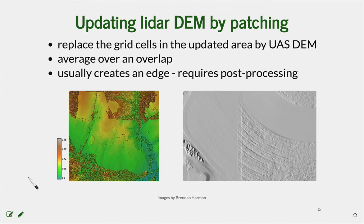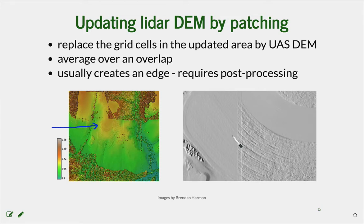The first and simplest approach is just patching the larger LiDAR-DEM with the UAS-DEM, either using a specific patching tool or using map algebra. As you can see in these two examples, if we just do this simple patching, or even a simple average along some overlap, we are creating an edge along the patch.